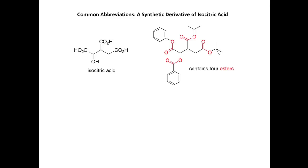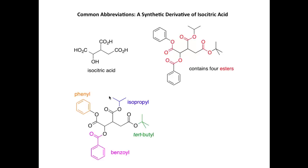We're now going to look at the use of common abbreviations when drawing organic structures, using a derivative of isocitric acid. Here is isocitric acid again with its three carboxylic acid groups and the alcohol. We're going to convert all three carboxylic acid groups to esters, and also convert the OH group into an ester. This gives a molecule with four different ester groups and various side chains. We can name each of those side chains: the blue group is the isopropyl group, this group here is the tertiary butyl group, when we have a benzene ring connected to a carbonyl this is called a benzoyl group, and the benzene ring by itself is called a phenyl group. If we want to represent this molecule much more simply, we can use abbreviations for each of the four different groups or side chains of the esters.